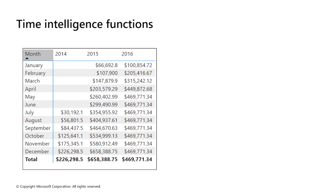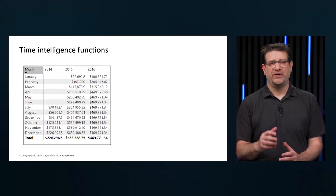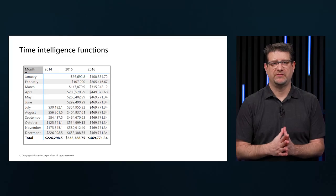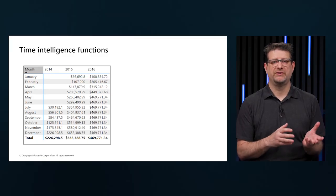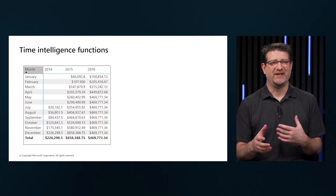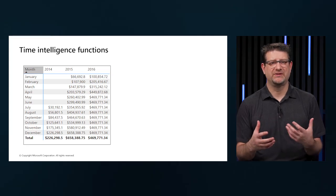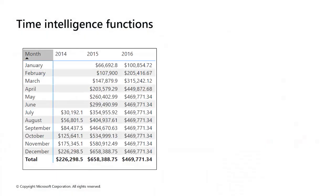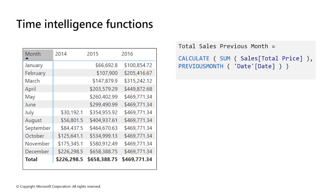While some time calculations are simple to do in DAX, others are more difficult. For instance, this screenshot shows what happens if we want to display a running total — notice that the totals increment for each month, but then reset when the year changes. In other programming languages, this result can be complicated and often involves several variables and looping through the code.